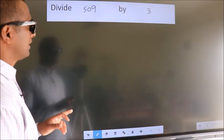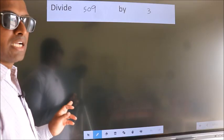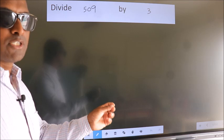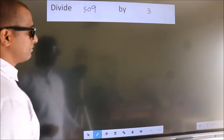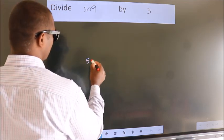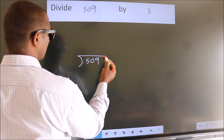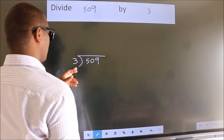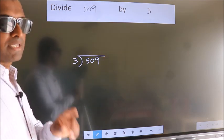Divide 509 by 3. To do this division, we should frame it in this way. 509 here, 3 here. This is your step 1.